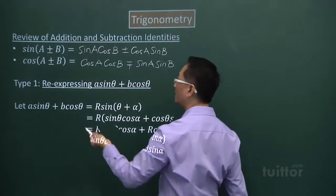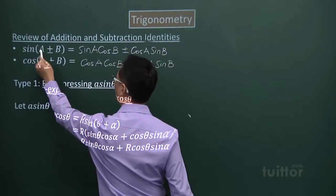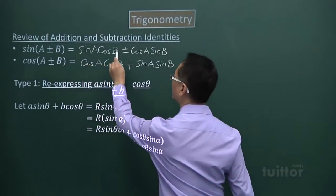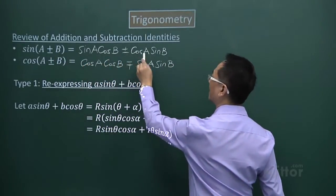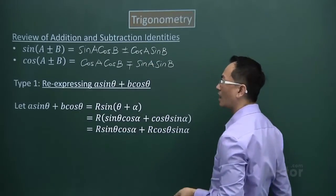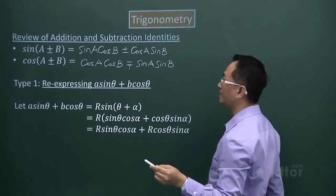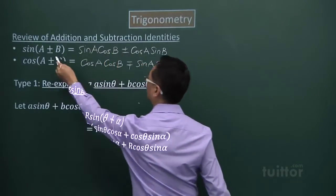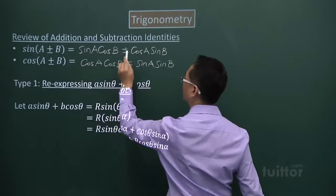If I follow the next one, sin(A - B), I will have sinA cosB minus cosA sinB. So for the first identity, you notice that the plus will correspond to the plus here, minus here you will get minus.